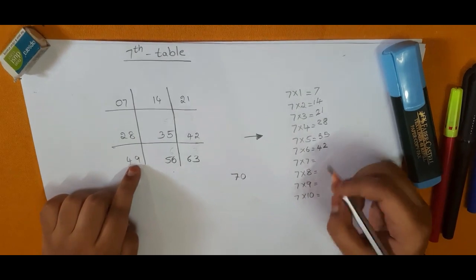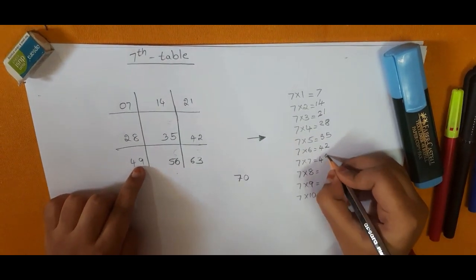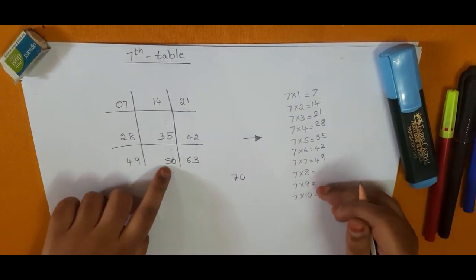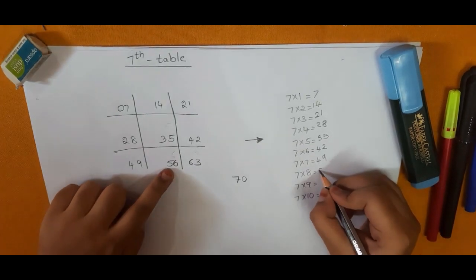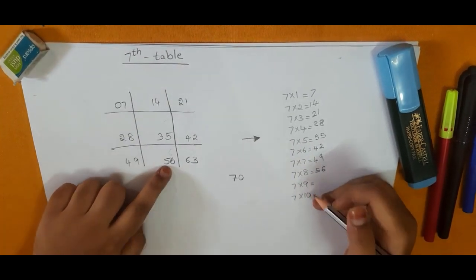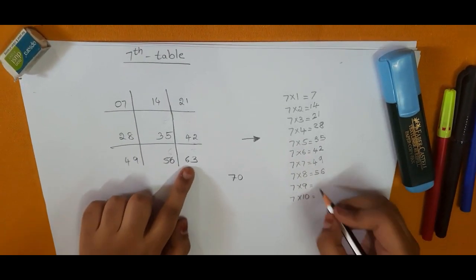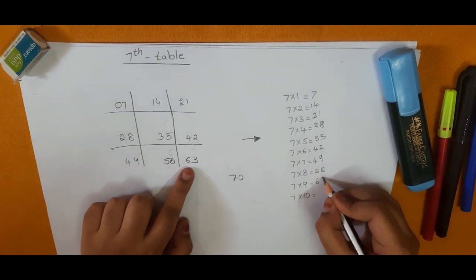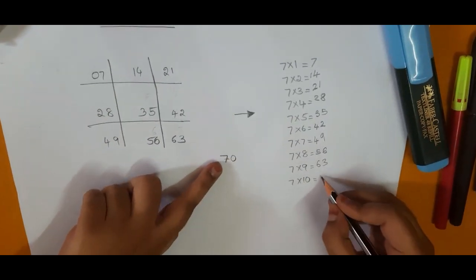Seven sevens are forty-nine, seven eights are fifty-six, seven nines are sixty-three, seven tens are seventy.